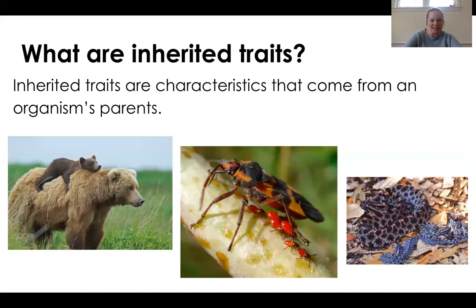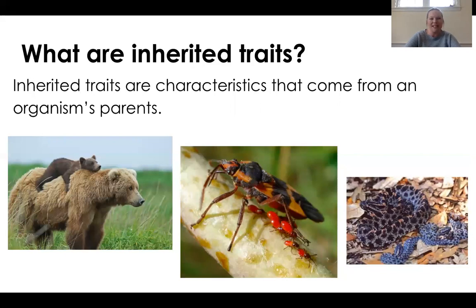What are inherited traits? Inherited traits are characteristics that come from an organism's parents. In this lesson, when I use the word organism, I mean a plant or an animal. As you look at these pictures, you're probably noticing that these parents and their offspring, or children, share many characteristics in common.